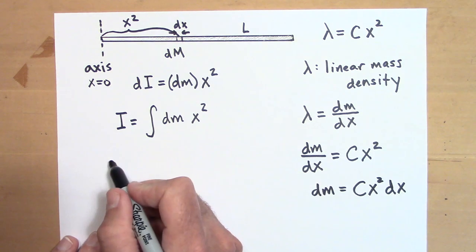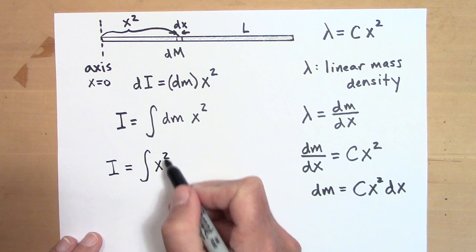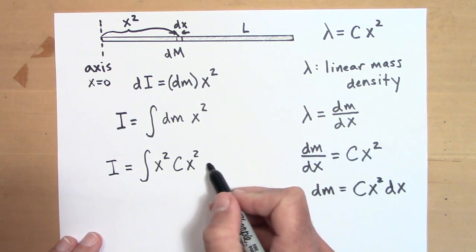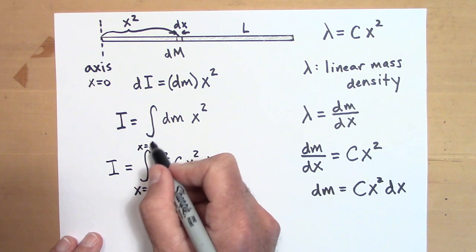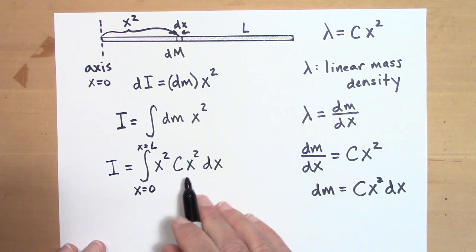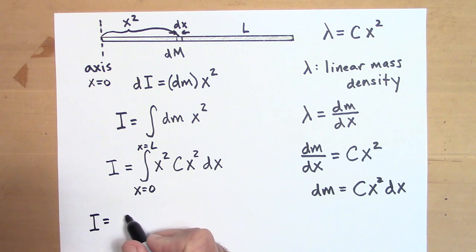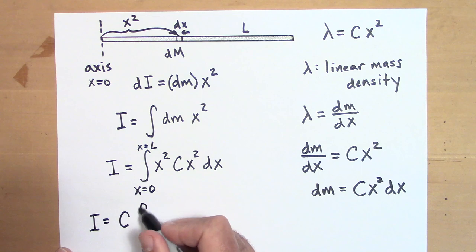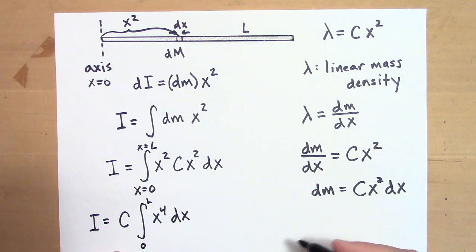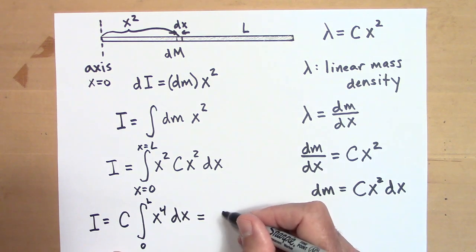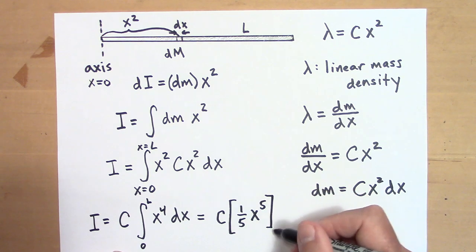Now I substitute into the integral. I equals the integral of x squared times dm, and substituting dm equals cx squared dx gives the integral of cx squared times x squared dx, from x equals zero to x equals L. That simplifies to c times the integral of x to the fourth dx from zero to L. Taking the integral gives c times one-fifth x to the fifth, evaluated from zero to L.